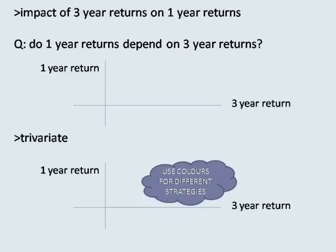For the impact of three-year returns and investment strategy on one-year returns, this is trivariate analysis and so it allows us to consider both of the possible influencing factors for one-year returns at the same time. From an analysis point of view, you will need to think about your conclusions from the previous two subsections and then use this section to extend that analysis.